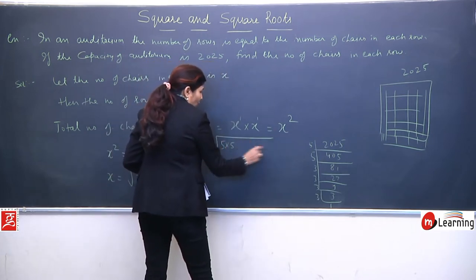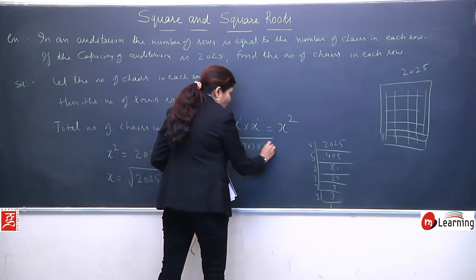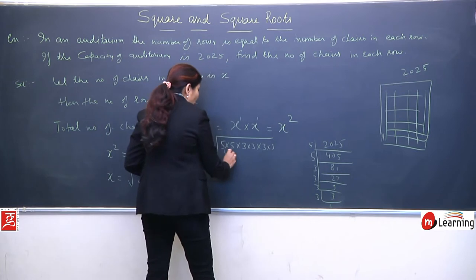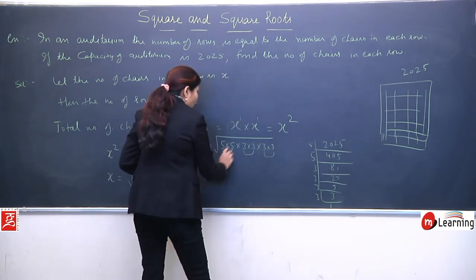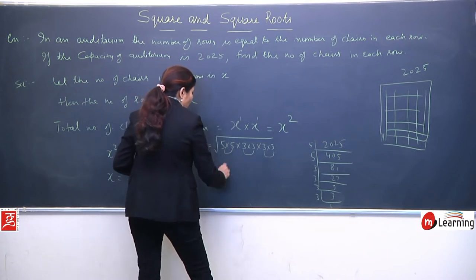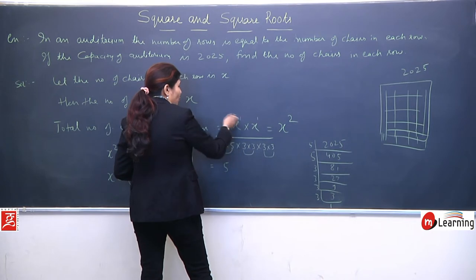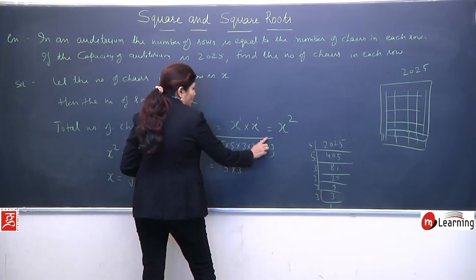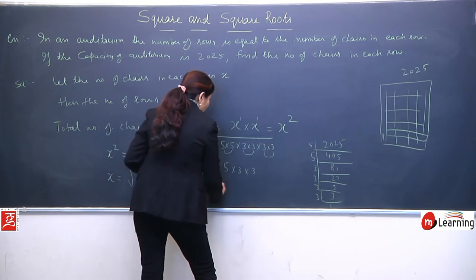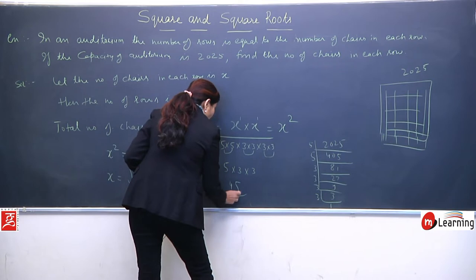So now we have factors of 2025. What are the factors? 5 into 5, 3 into 3, and another 3 into 3. We got pairs, so it's very simple. We learned in the shortcut trick that when we get pairs, take them out of the square root cap, make them one. Take out one 5 from this square root, take out one 3 from this square root. Similarly, 5 times 3 is 15, times 3 is 45.